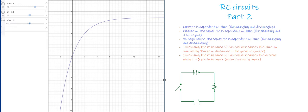One of the other things that we found was that increasing the resistance of a resistor in this circuit caused the time it took to completely charge or discharge the capacitor to be a greater value or a longer time to reach the complete or total charge. We also found that increasing the resistance of the resistor caused the current when t equals zero seconds, or in other words, the initial current, to be a lower value.